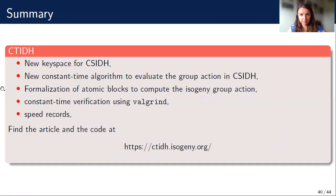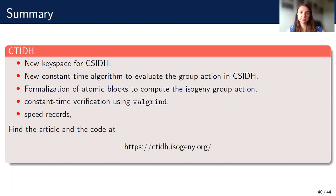To sum up, what is CTIDE? CTIDE is a new key space for CSIDH using batching. CTIDE is a new constant time algorithm to evaluate the group action using the Matryoshka isogenies. In CTIDE, we also formalize atomic blocks — the evaluation of the group action as a sequence of isogenies. We verify our constant time claims using Valgrind, and we obtain significant speed records. You can see our article and get the code at our website. Thank you.